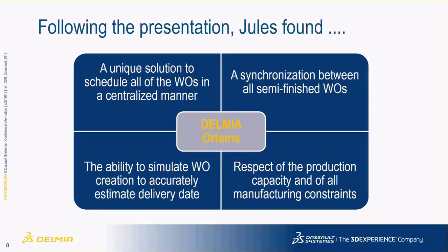During the demo at the Global Industry Event, Jules found a very interesting solution. In a unique planning reference, you have all work orders centralized, plus synchronization between different work orders — when you move an operation you see the effect on the whole production cycle. You can also track and synchronize semi-finished work orders, which is very interesting because with an ERP working at infinite capacity it is almost impossible to synchronize those. With Delmia Ortems you can ensure that when you plan your final assembly, all components and semi-finished products will be ready.